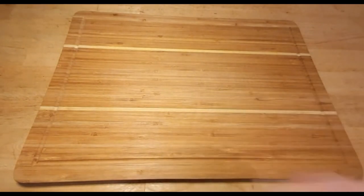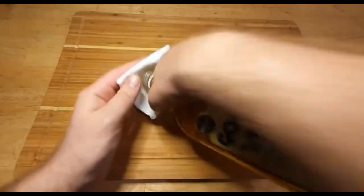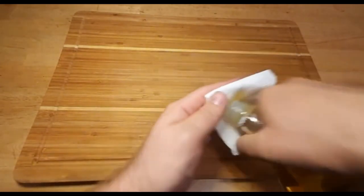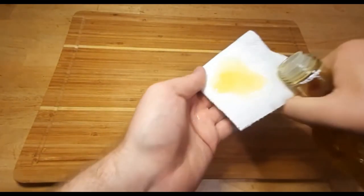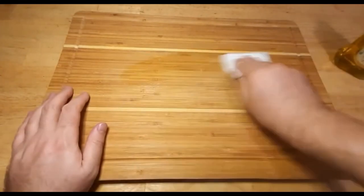Once you've cleaned your cutting board, it's crucial to dry it completely to prevent the growth of bacteria or mold. Place it in an upright position or prop it up against a wall, allowing air to circulate and dry the surface evenly. Ensure the board is completely dry before proceeding to the next step.